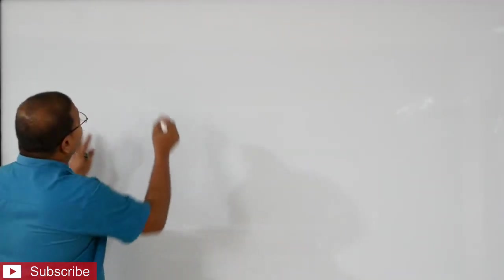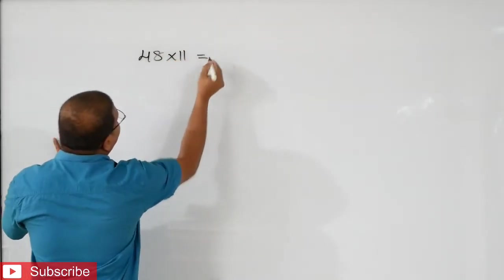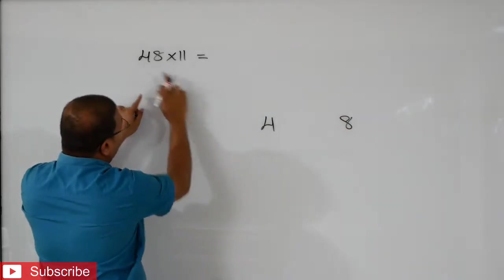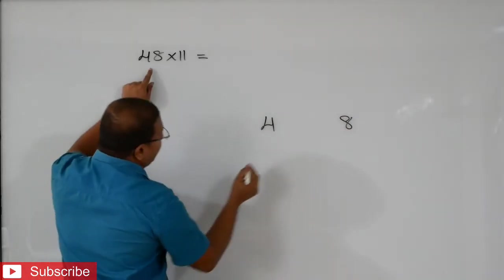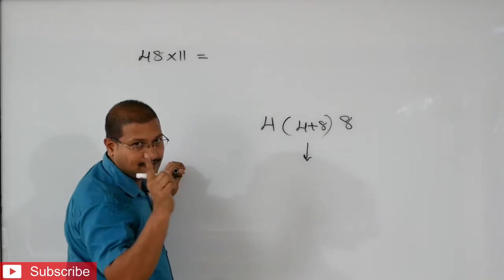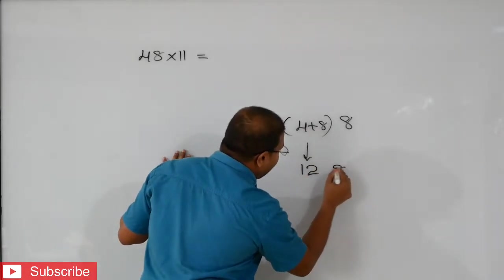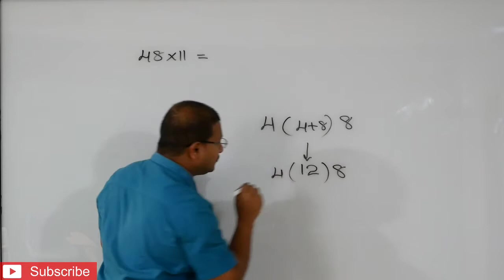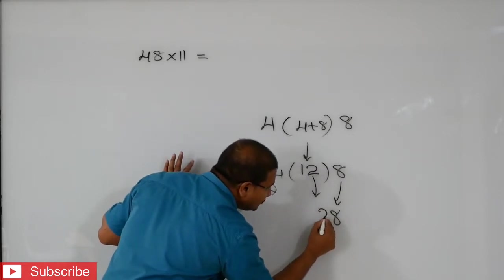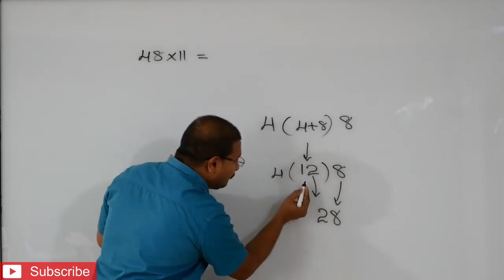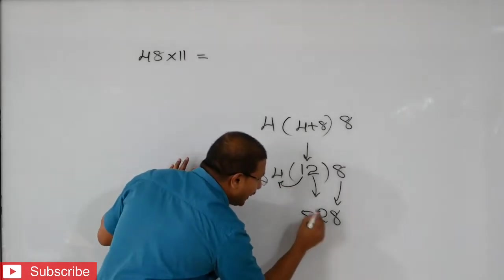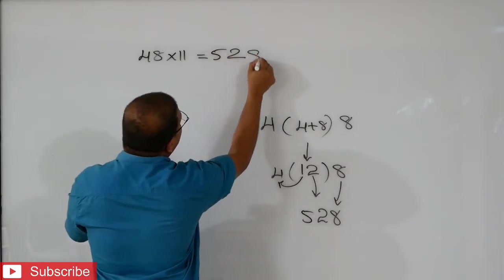Let us see now 48 into 11. That means first, you write 4 and 8. After that, in the middle, 4 plus 8. What you will get? 12. So 12 will be here — we will write 8, then 2 in the middle. After that, this 1 will add to 4. That means 1 plus 4 is 5. So we will get 528.